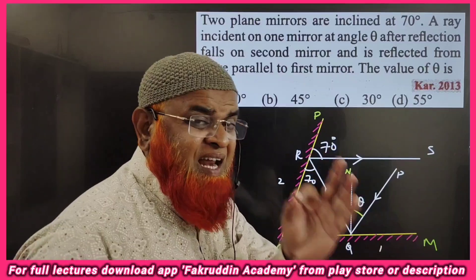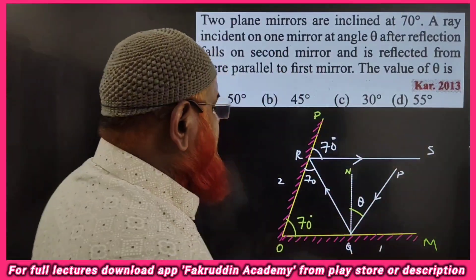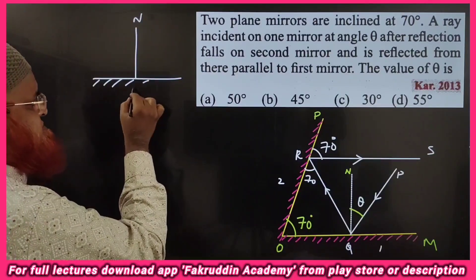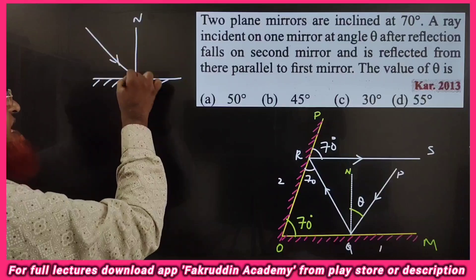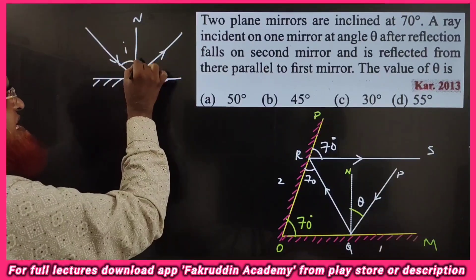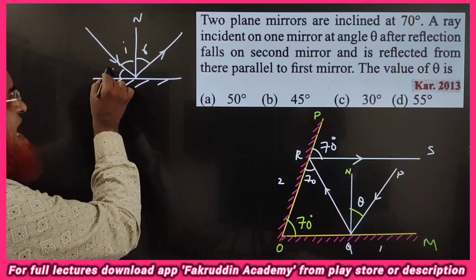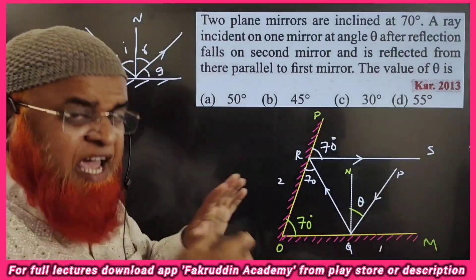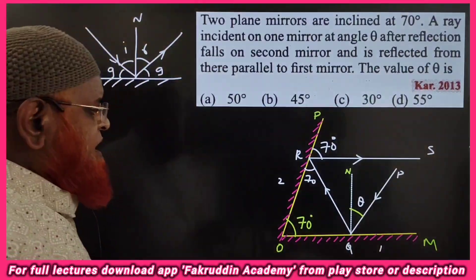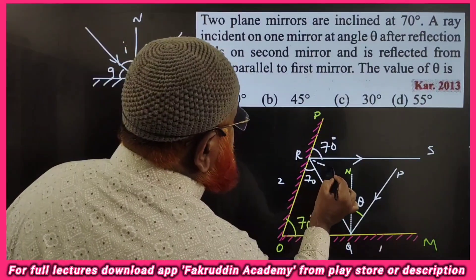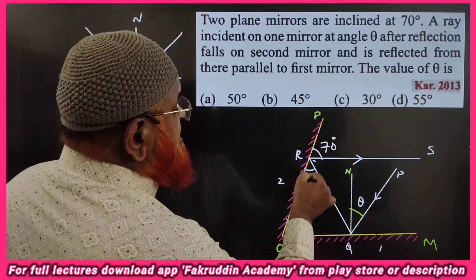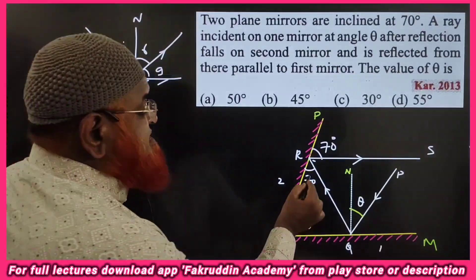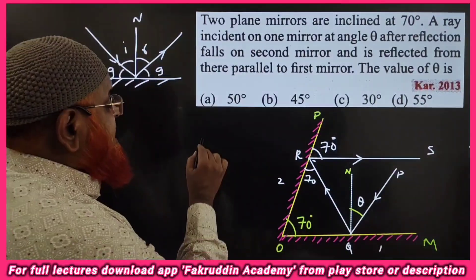These are called glancing angles and they are going to be the same. The glancing angle: for a mirror, the normal is drawn, the light ray strikes and reflects back, and the angle between the mirror surface and the ray is the glancing angle. Both glancing angles are always equal. So these two are 70 degrees, giving 70 plus 70 equals 140.